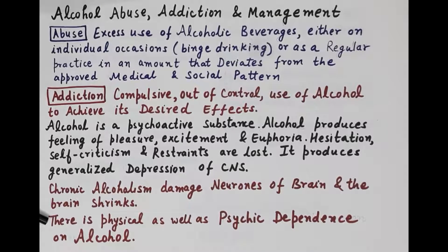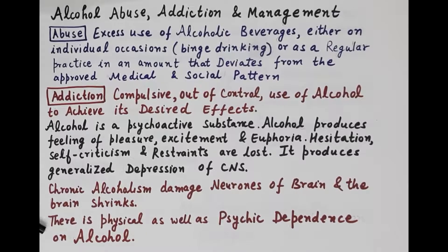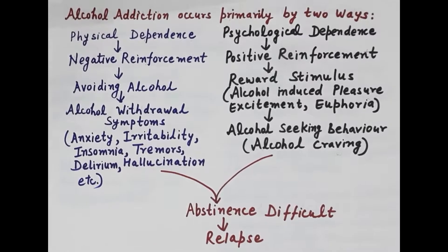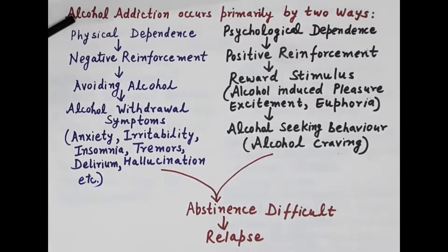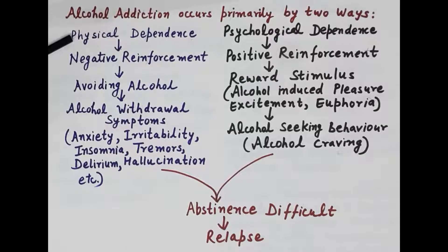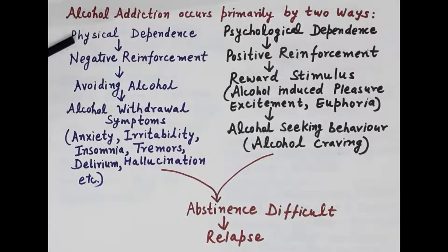Chronic alcoholism damages neurons of the brain and the brain shrinks. Chronic alcoholism also causes physical as well as psychological dependence on alcohol. Alcohol addiction occurs primarily in two ways: physical dependence and psychological dependence. Physical dependence develops on repeated or chronic consumption of alcohol because alcohol is present in the body all the time, and the body starts depending on it.